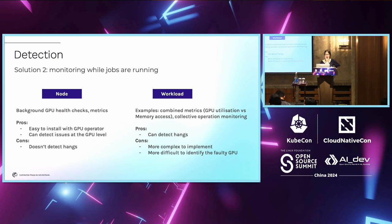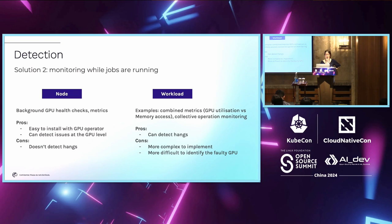The downside of DCGM metrics is that it's very difficult to detect hangs with those metrics. You can also do monitoring at the workload level — for example, combining metrics on GPU utilization versus memory access. We noticed that in some hanging workloads we saw 100% GPU utilization and zero percent memory access. You can also collect metrics around collective operations — how long collective operations take. The pros are they can detect hangs, but they're more complex to implement and it's harder to identify which specific GPU is responsible for the hang.